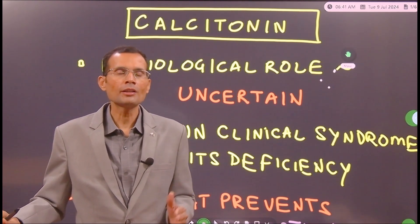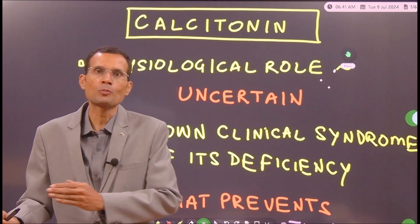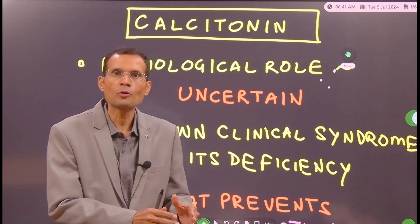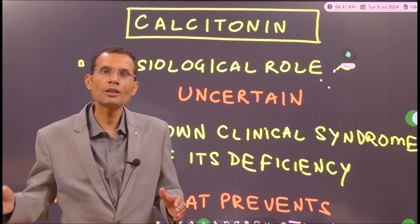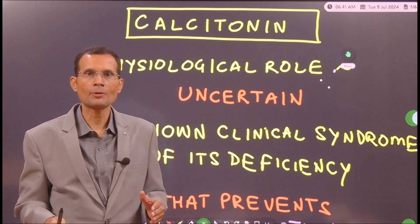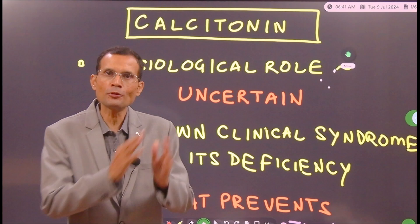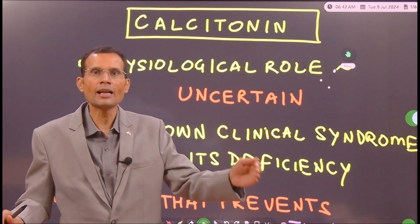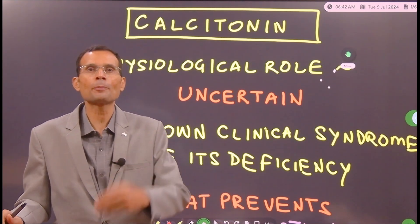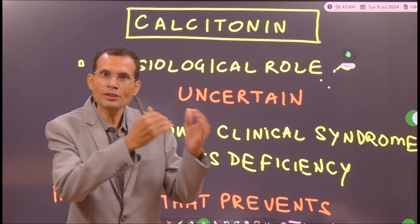Before we proceed further and talk about it as an unimportant hormone, let me tell you its importance in one part of life at least. Look, calcitonin is an anti-PTH hormone. Parathyroid hormone increases plasma calcium levels. Calcitonin decreases plasma calcium levels and the action is opposite.